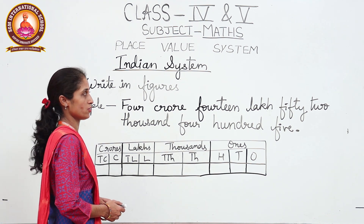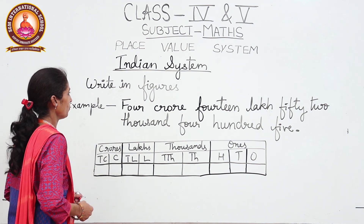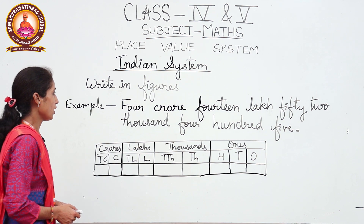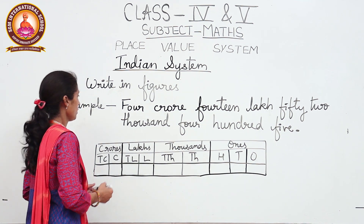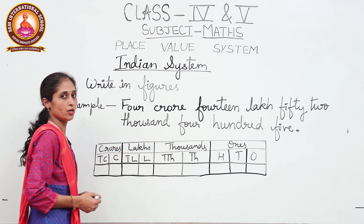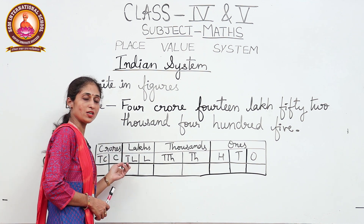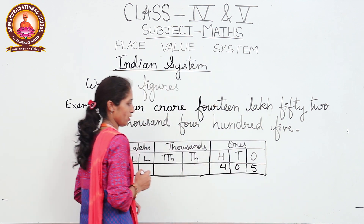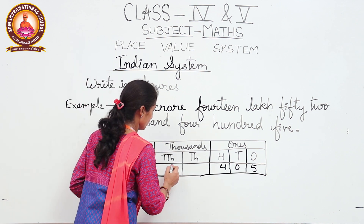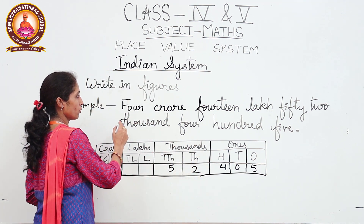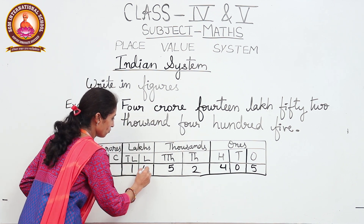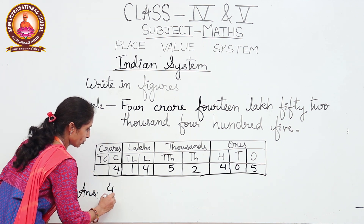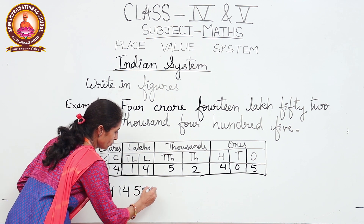Now we are going to learn how to write a given number name in figures under the Indian place value system. We will take the example: four crore fourteen lakh fifty-two thousand four hundred five. First we make the four periods — ones, thousands, lakhs, and crores — then write the digits under their respective places: four hundred five in the ones period, fifty-two thousand in the thousands period, fourteen lakh in the lakhs period, and four crore in the crores period.